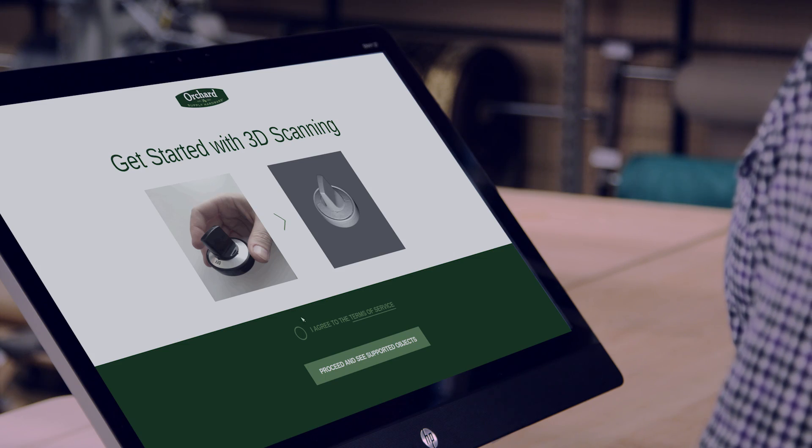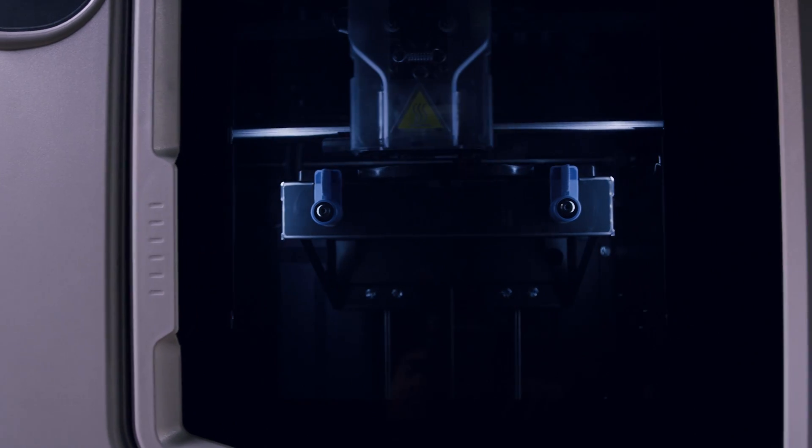Option number two is that you have a part that broke and you'd like to have a replica of that in a different kind of material. They can have that item scanned, 3D scanned, there in the store and then printed. We have bronze, stainless steel. If you want to get really fancy, we can do it in gold for you.